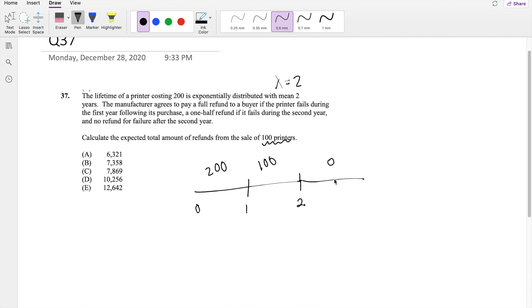So knowing that, this is not too bad. This is essentially the expected value going from 0 to 1. It's going to be 200 times the probability distribution function, which we know for exponential distribution to be 1 over 2 e to the negative t over 2. Plus, going from 1 to 2, the expected value is 100 times the probability distribution function, which is 1 half e to the negative t over 2.